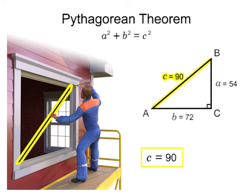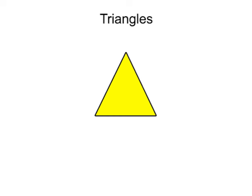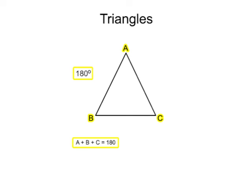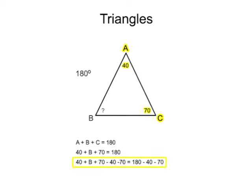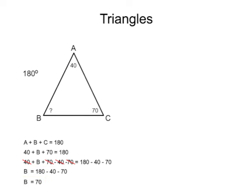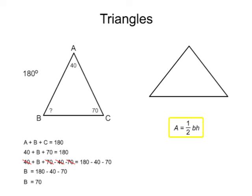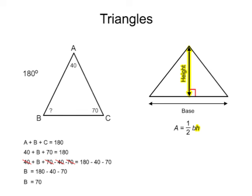In addition to the Pythagorean Theorem, triangles have several more unique characteristics that are useful in everyday math. For instance, the three angles of a triangle will always add to be 180 degrees. So, if two of the angles are known, it's easy to calculate the third angle. Another unique characteristic is that the area of a triangle can be calculated by multiplying one-half times the base times the height. The base can be any one of the three sides, usually drawn at the bottom, and the height is the length perpendicular to the base. If the base and height are known, the area can be calculated.